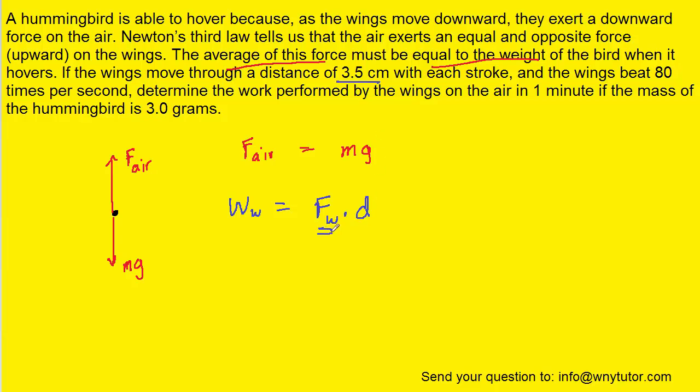It turns out that the force exerted by the wing will be equal in magnitude to the force exerted by the air, and that can be seen by Newton's third law. If the air is pushing up on the bird with a force of F_air, that means the wing must push down against the air in order to maintain equilibrium, so we know that these two forces are equivalent.